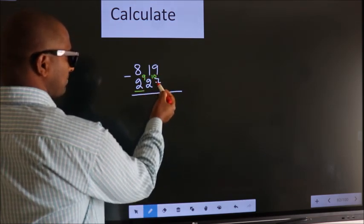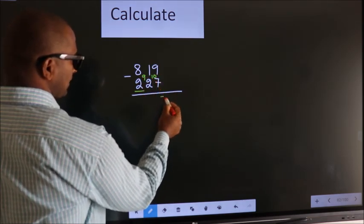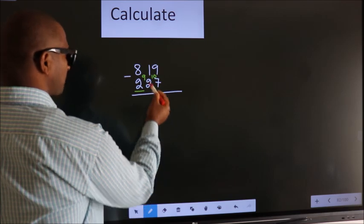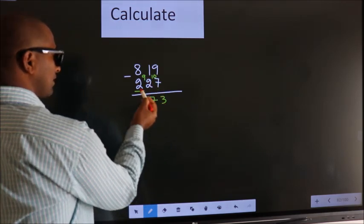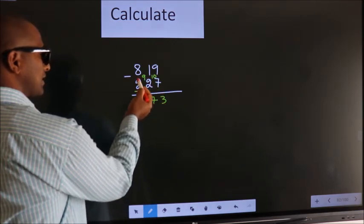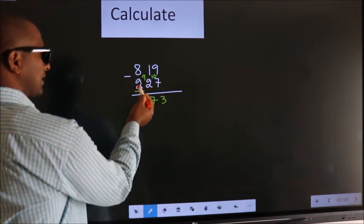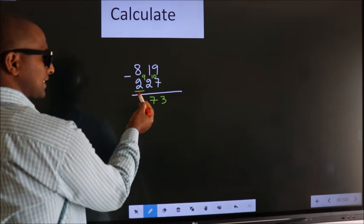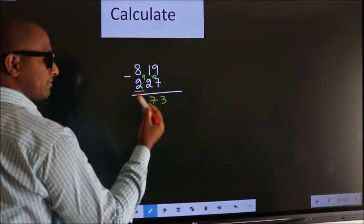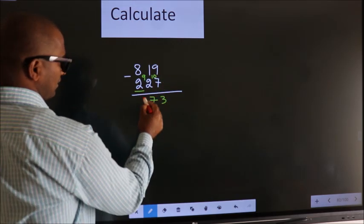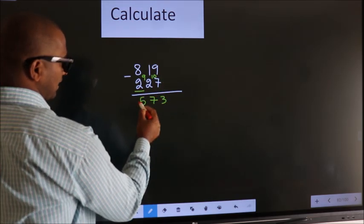Now 10 minus 7 equals 3. 9 minus 2 equals 7. For the first digit, 8 minus 2 equals 6. Decrease more by 1, we get 5.